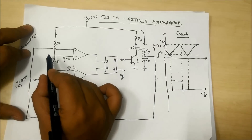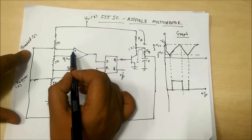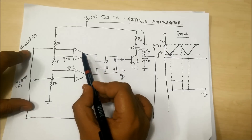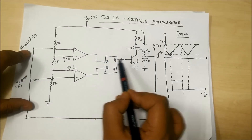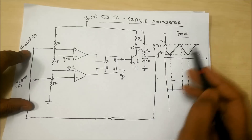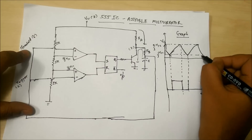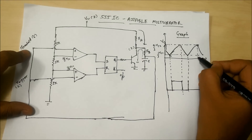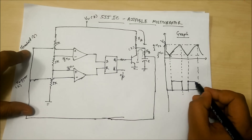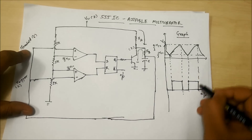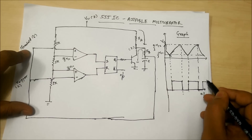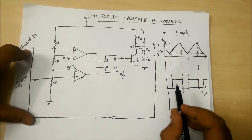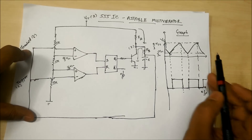Once the capacitor reaches 2/3 VCC again, the threshold pin becomes high — the non-inverting terminal of the upper comparator becomes more than the inverting terminal, upper comparator produces a high output, set becomes high, Q becomes high, the transistor starts discharging. Q-bar becomes low, so output becomes low again. When it reaches 1/3 VCC, output turns high again — and this cycle continues. This is why it is called an astable multivibrator; the entire game is played between 1/3 VCC and 2/3 VCC.